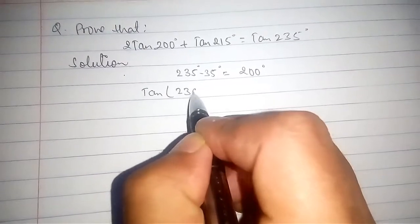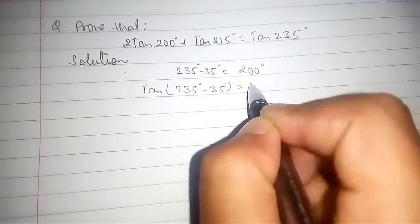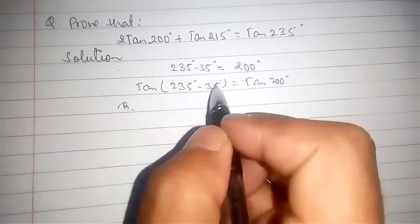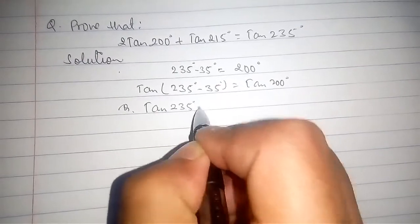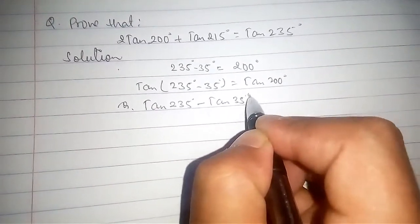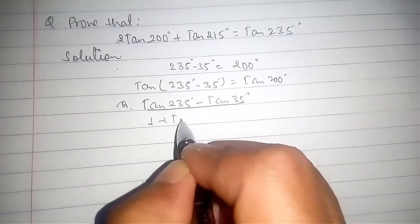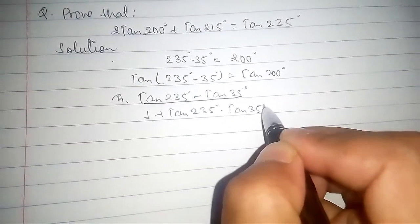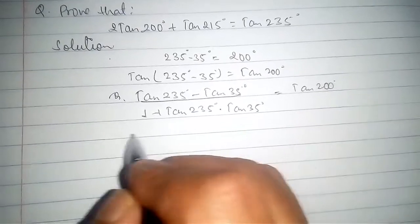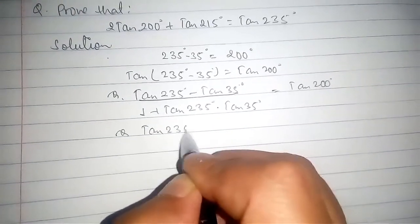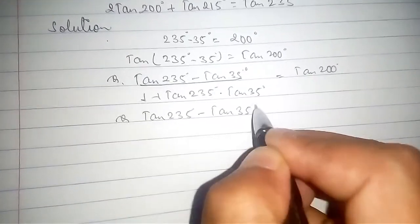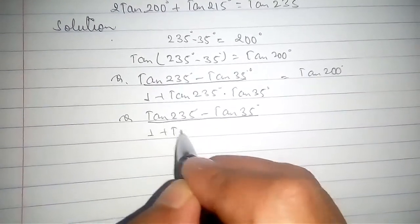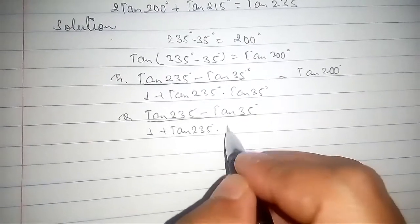We get tan(235° - 35°) equals tan(200°). We apply the formula: tan(first angle minus second angle) equals tan(first angle) minus tan(second angle), divided by 1 plus tan(first angle) times tan(second angle), and this equals tan(200°). So: tan(235°) minus tan(35°) divided by 1 plus tan(235°)·tan(35°) equals tan(200°).